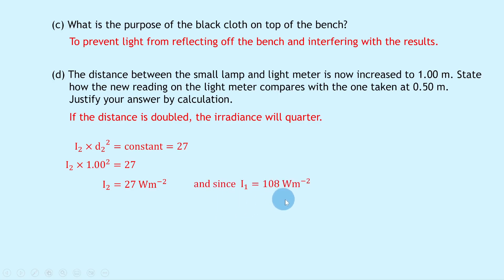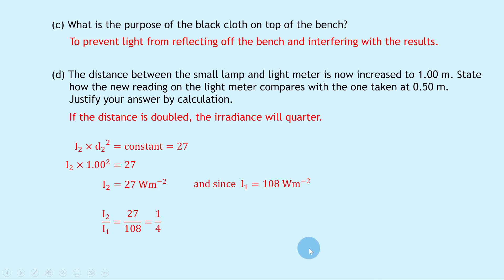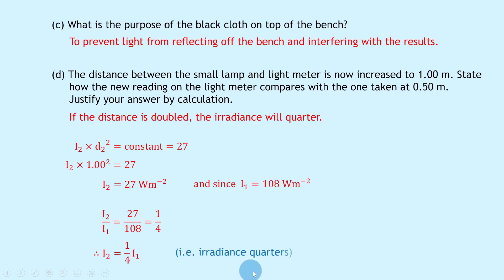With I₁ = 108 and I₂ = 27, dividing I₂ by I₁ gives 27/108 = 0.25, i.e. one quarter. Therefore I₂ = ¼ × I₁ — irradiance quarters when the distance is doubled, confirming the inverse square law.